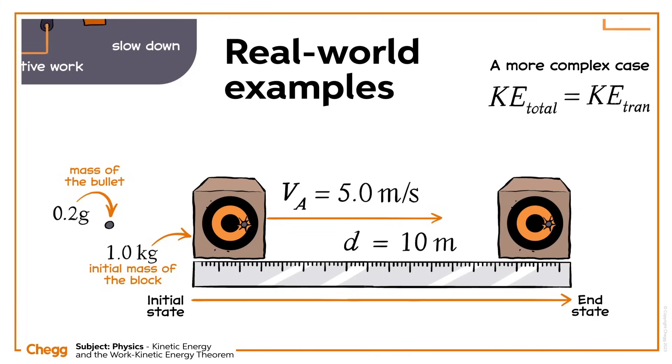Let's assess what we know. We know the initial velocity VA is 5 meters per second, and VB is 0 meters per second. Since the bullet embedded in the wood, the block and bullet act as a single object with a combined mass M of 1.0002 kilograms. The displacement D is 10 meters.